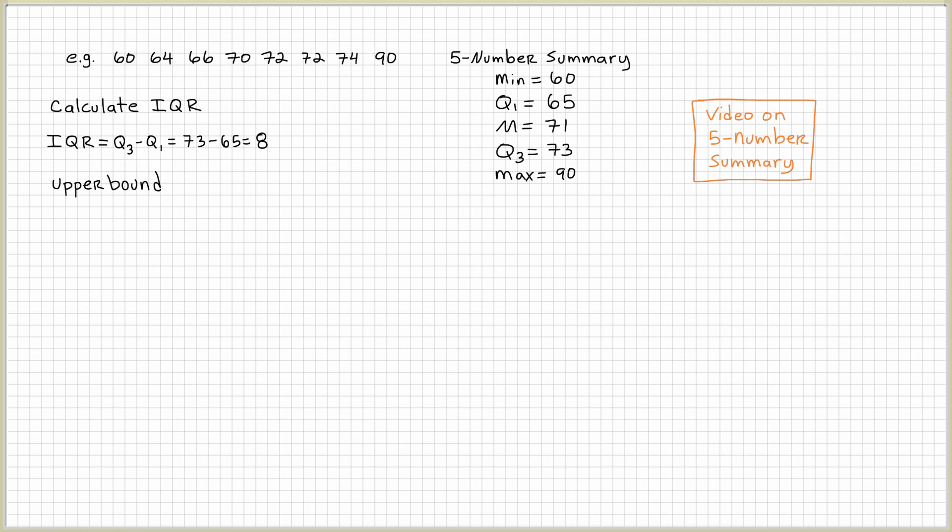Let's calculate the upper bound value. That has a formula: Q3 plus 1.5 times IQR. 1.5 is always going to be there. IQR you have to calculate, which we already did. Q3 we have that value with our five number summary. Let's plug it in. Q3 is 73 plus 1.5 times 8, and 1.5 times 8 is 12, so 73 plus 12 equals 85. Note that the upper bound value formula has a plus sign, Q3 plus 1.5.